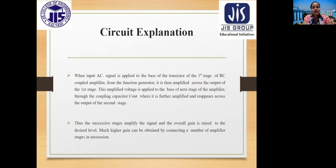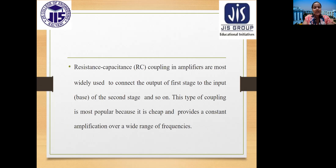In a two-stage RC coupled amplifier, the AC input signal applied to the base of the first stage transistor is amplified across its output. This amplified voltage is then applied to the base of the next stage through the coupling capacitor Cout, where it is further amplified. Successive stages amplify the signal to achieve the desired overall gain. RC coupling is most popular because it is inexpensive and provides constant amplification over a wide range of frequencies.